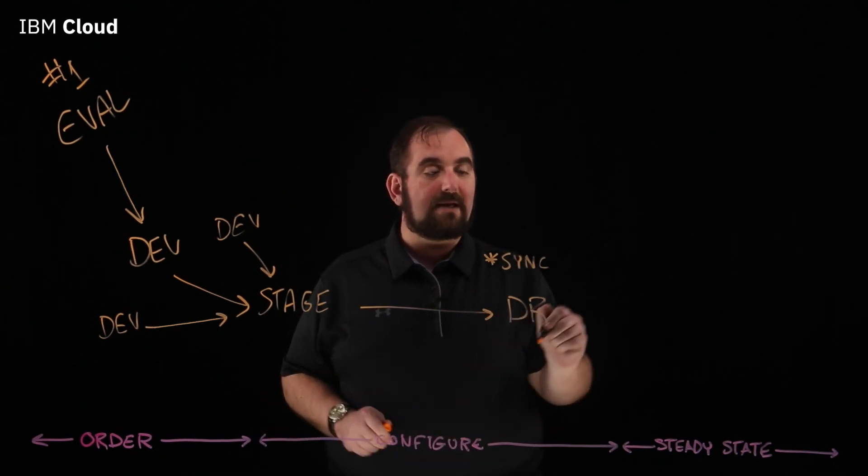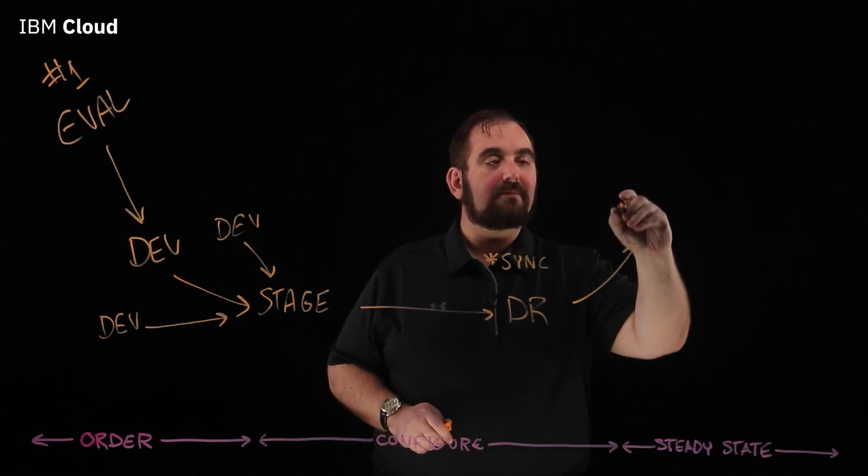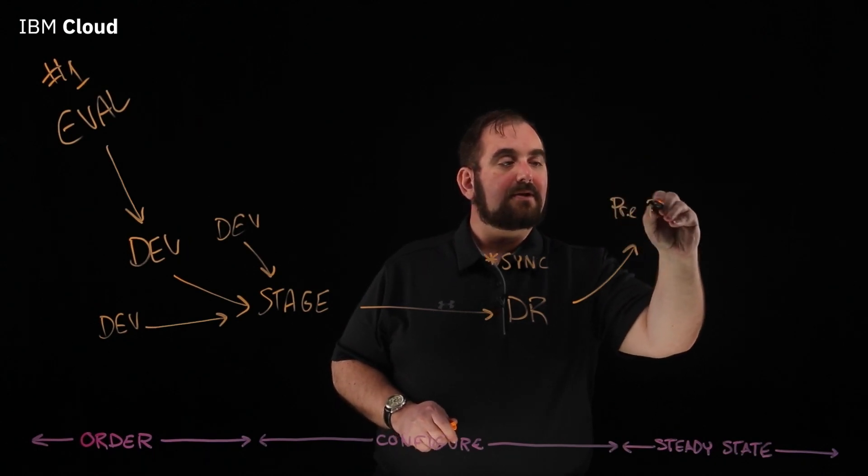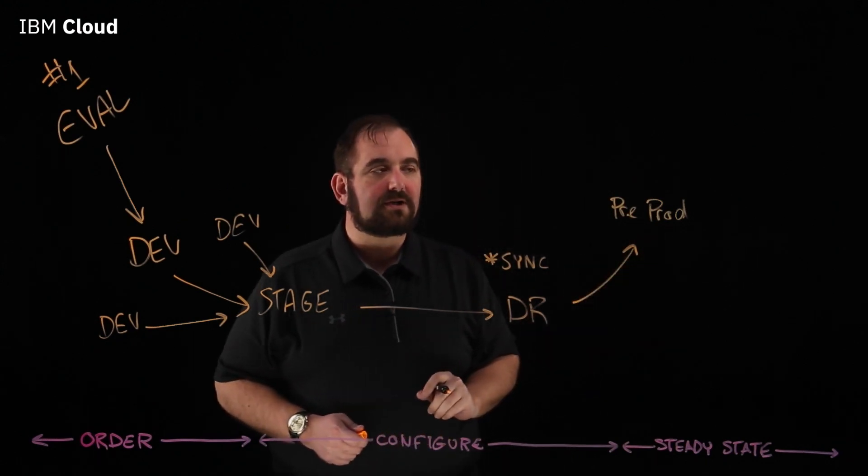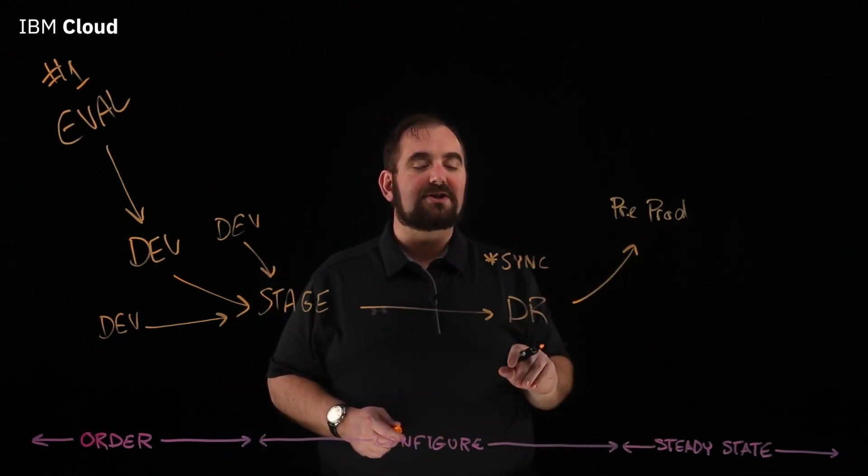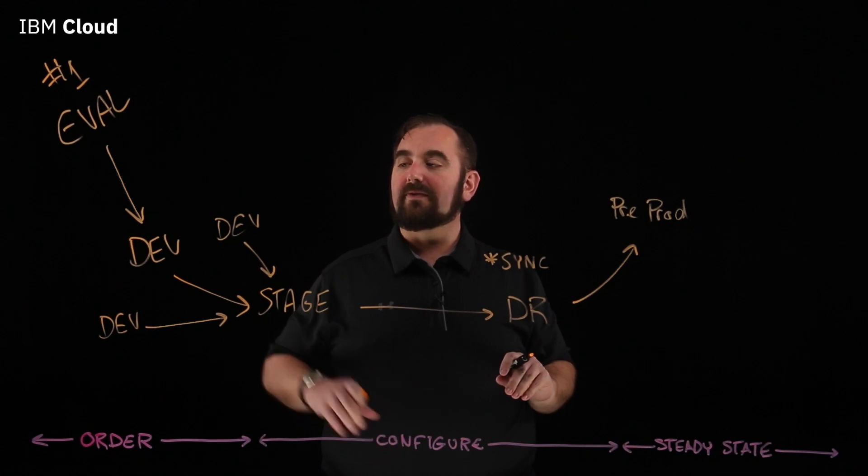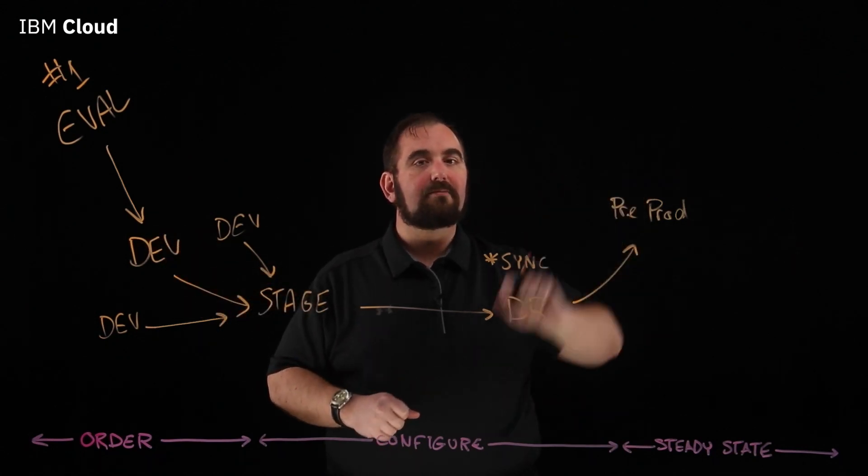Next, once we're happy here, now we're going to move up and we're going to get our pre-prod systems up. So your pre-prod is going to be slightly downsized from production, but the goal is confirmation testing. Your eventual flow will be dev, stage, pre-prod, prod.